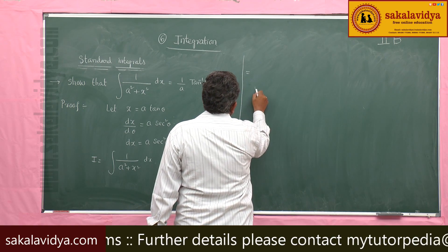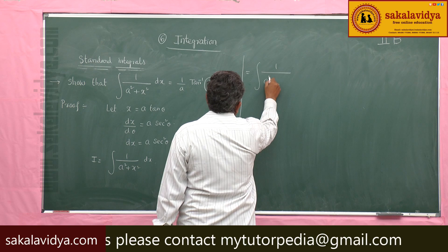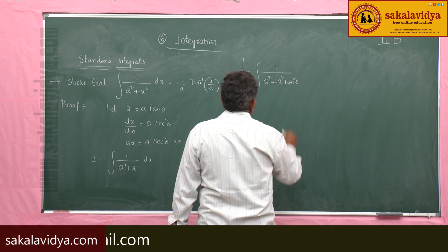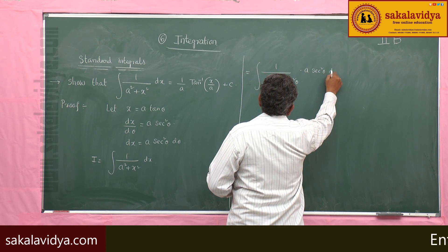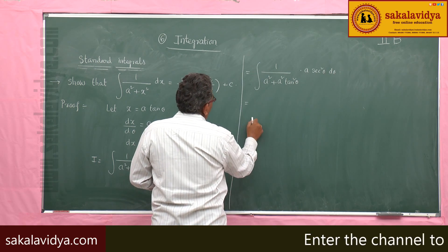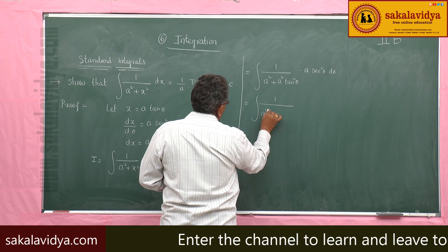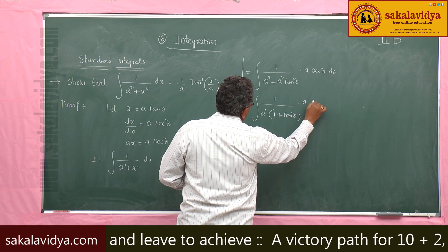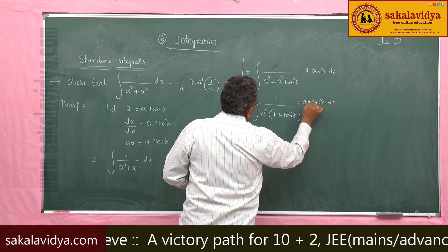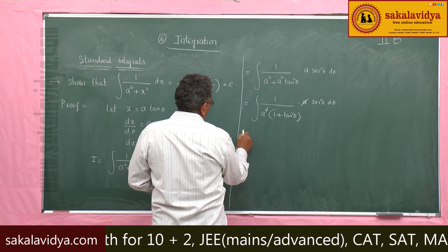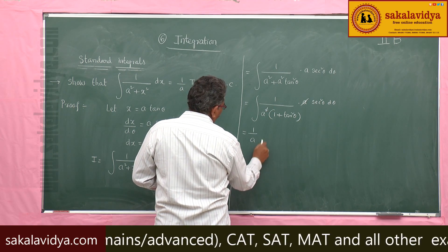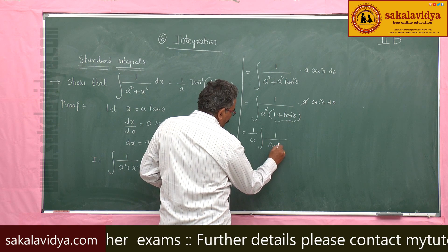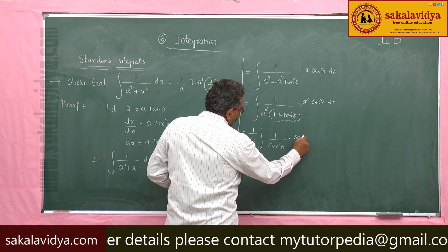Substituting: 1/(a² + x²) becomes 1/(a² + a²tan²θ), and dx = a·sec²θ dθ. So the integral is ∫ 1/(a²(1 + tan²θ)) · a·sec²θ dθ.